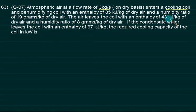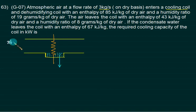The air leaves the coil with an enthalpy of 43 kilojoules per kg. The condensate of water leaves this. What is the required cooling capacity of the coil in kilowatts? We have to first draw the block diagram. Check the condition. M dot is 3.